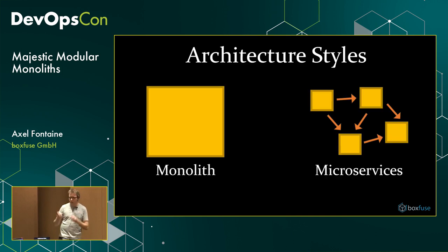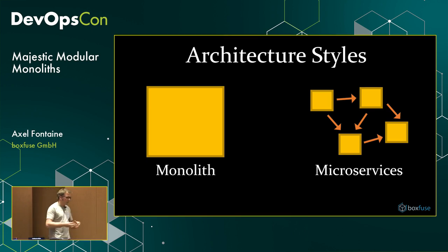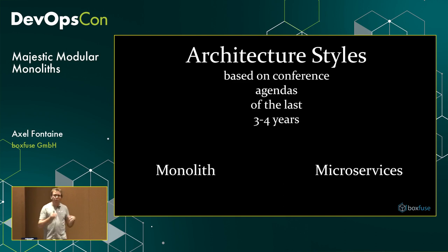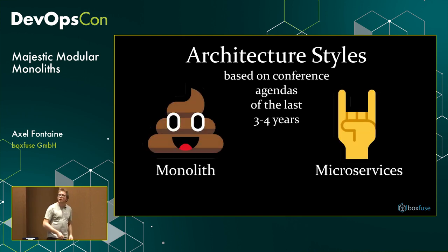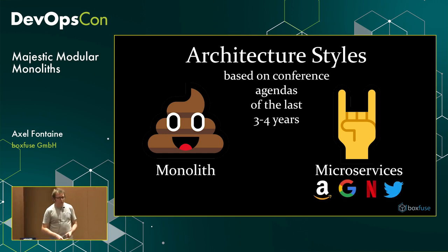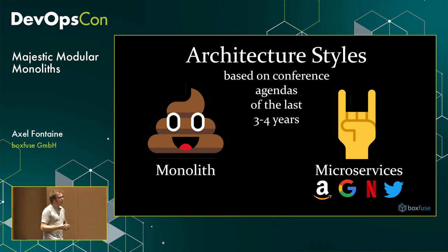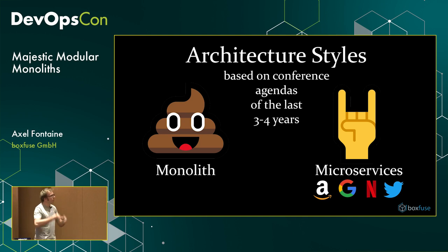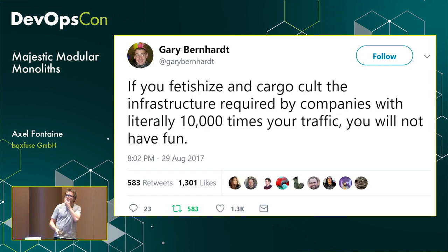If we talk about architecture over the last few years, we've primarily heard of two styles: the monolith — often not described very favorably — and microservices. Based on feedback from conferences over the last three or four years, we have a rather negative view of monoliths and a very positive view of microservices, because they're often associated with forward-thinking companies like Amazon, Google, Netflix, and Twitter, which have been large proponents and contributors to the open source ecosystem.